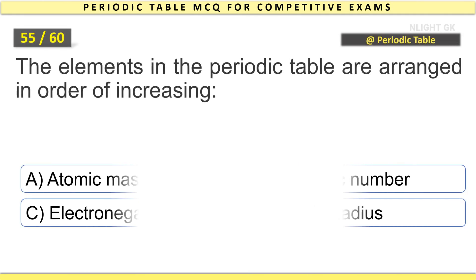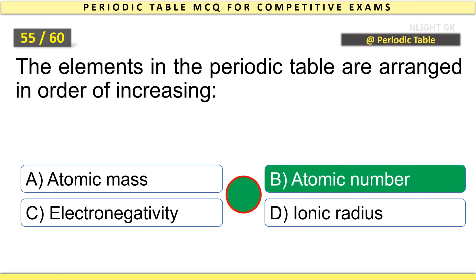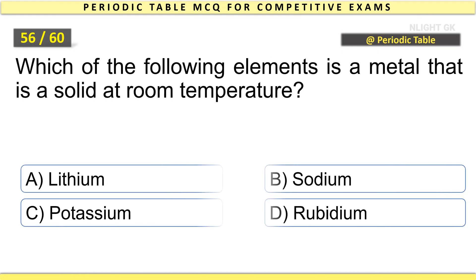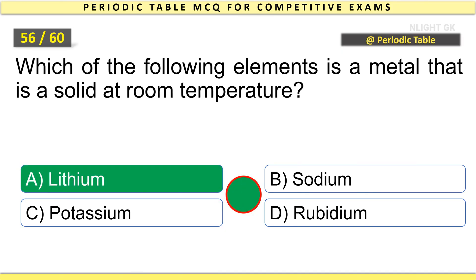The elements in the periodic table are arranged in order of increasing atomic number. Which of the following elements is a metal that is a solid at room temperature? Lithium.